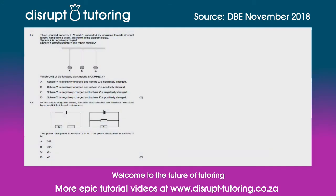Question 1.7 gives us three charges X, Y, and Z. Sphere X is negatively charged and attracts Y but repels sphere Z. Since X attracts Y, sphere Y must have a net positive charge. Since X repels Z, sphere Z must have a negative charge. So sphere Y is positively charged and sphere Z is negatively charged.